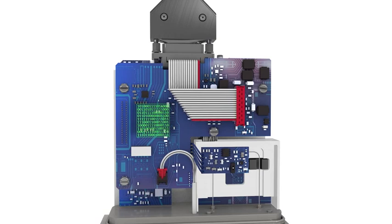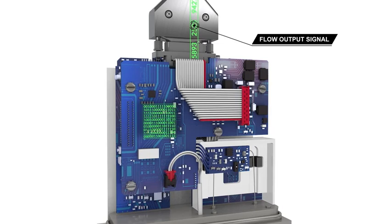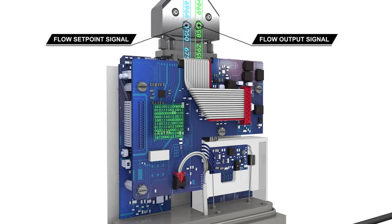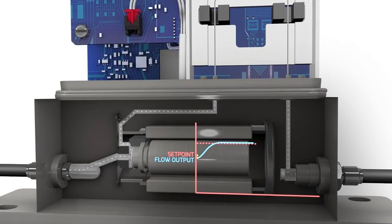For a Coriolis mass flow controller, the user sends a flow set point signal to the device. The control electronics compares the flow signal to the user set point signal. If the set point or required flow is higher than the measured flow, the controller will open the control valve, letting more flow through.